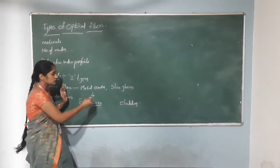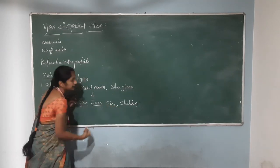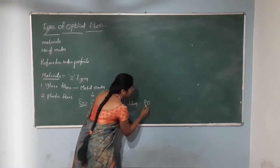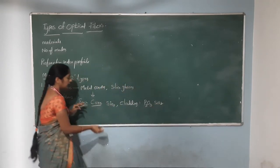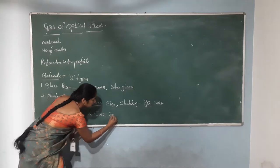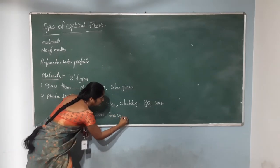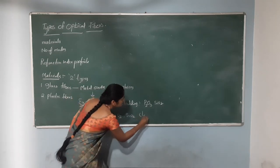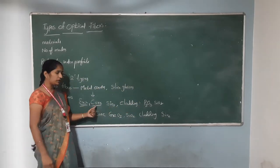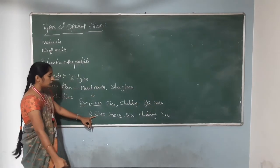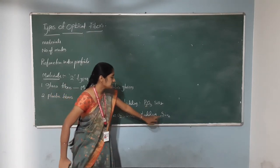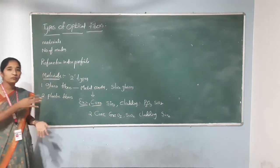The second example combination: core is GeO2 and SiO2, cladding is SiO2. By using these different combinations of core and cladding materials, we fabricate the glass fibers.